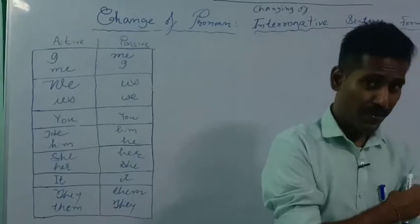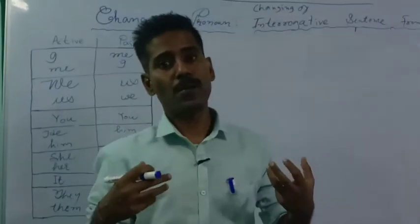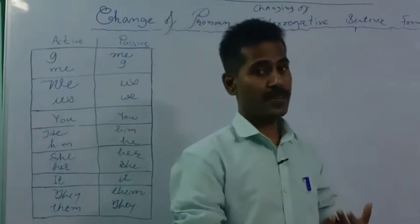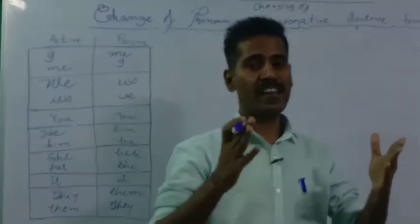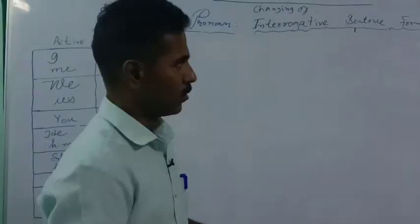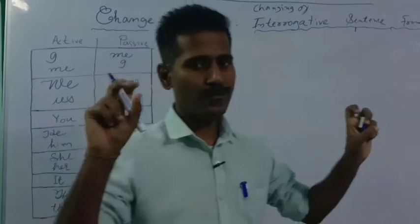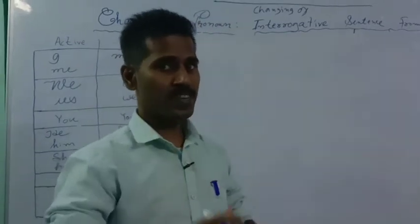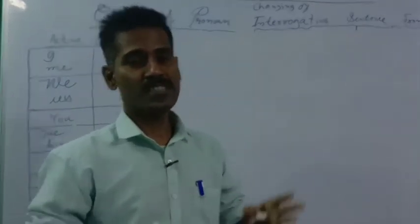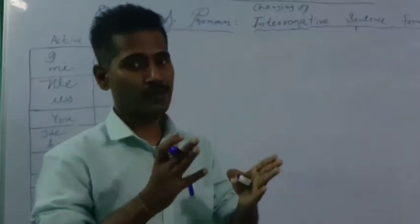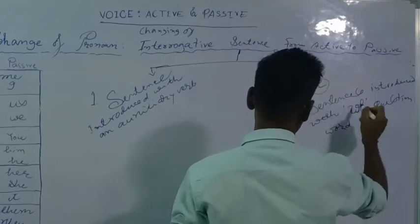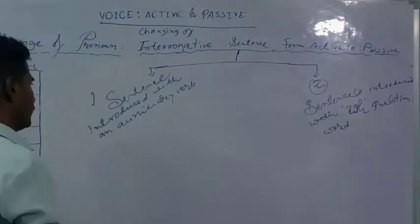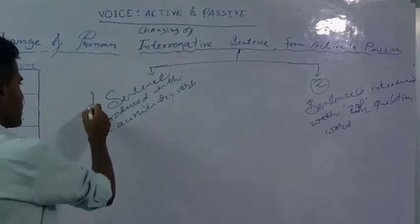See, in active voice 'I' becomes 'me' in passive voice, and 'me' in active becomes 'I' in passive — vice versa. We just follow the chart while changing sentences from active to passive. Now let us start with interrogative sentences. There are two types: Type 1 — the sentence begins with an auxiliary verb, and Type 2 — the sentence begins with a WH question word such as who, what, where, when, why, or how.